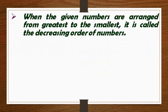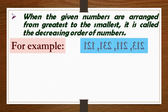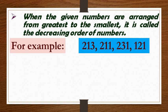When the given numbers are arranged from greatest to smallest, it is called the decreasing order of numbers. For example, the numbers 213, 211, 231 and 121 can be arranged in decreasing order as shown below.